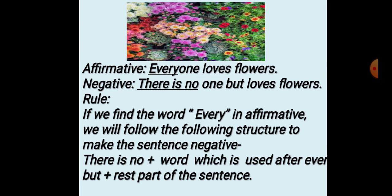Now you see this one. 'Everyone loves flowers' — this is the affirmative form. And you see the negative form: 'There is no one but loves flowers.' This is a very important rule for you. So listen to this rule very attentively. If we find the word 'every' in affirmative, we will follow the structure: 'There is no' plus the word used after 'every', then plus 'but' plus the rest of the sentence.